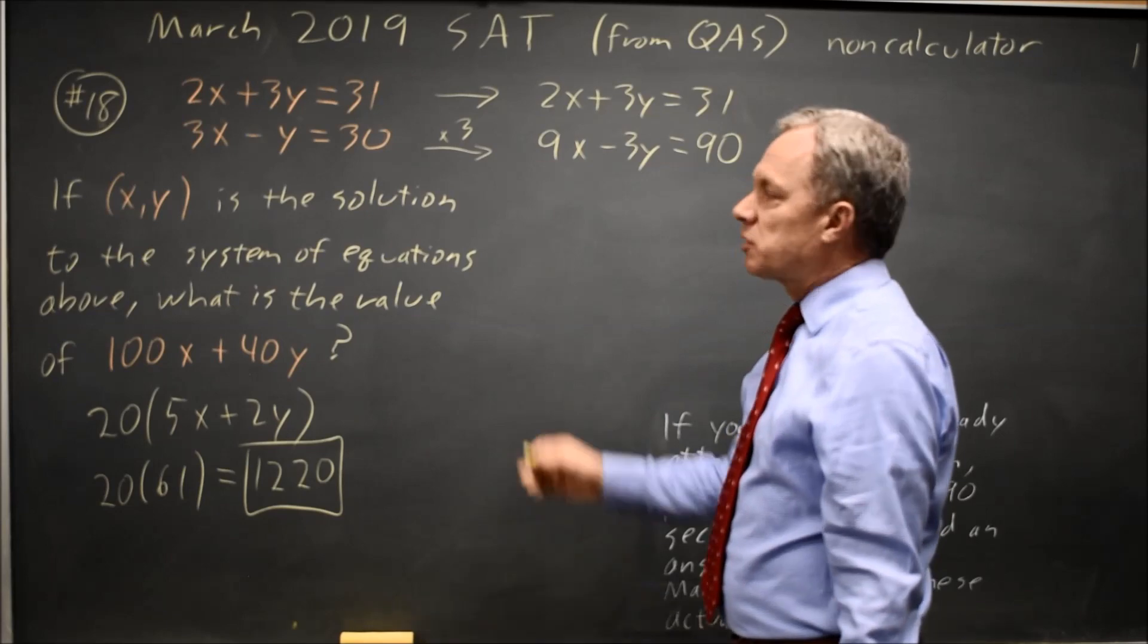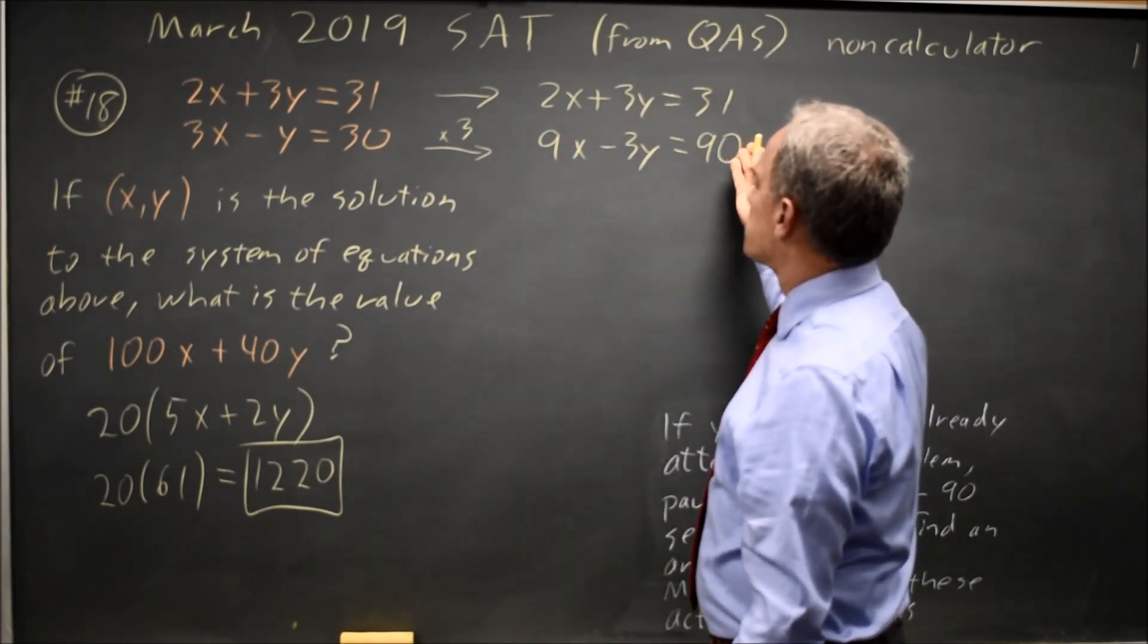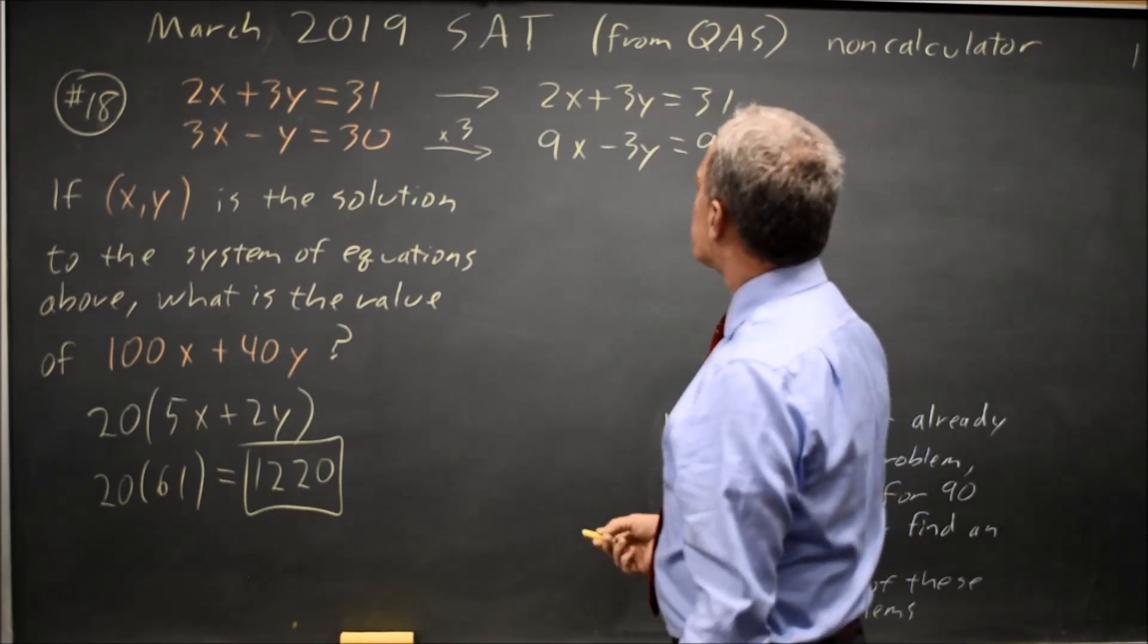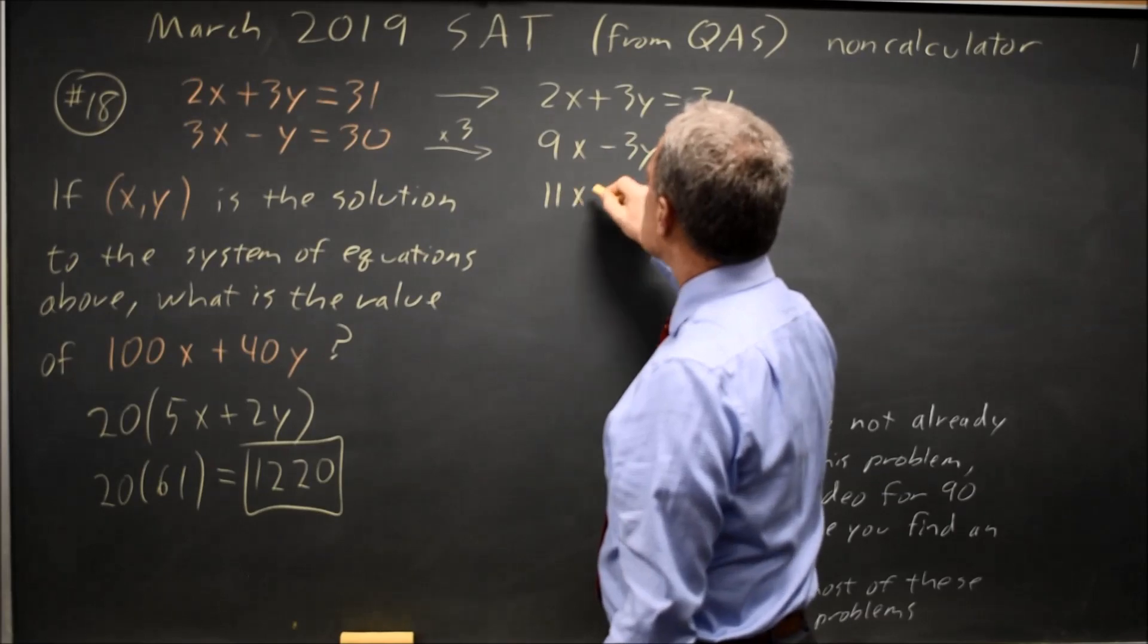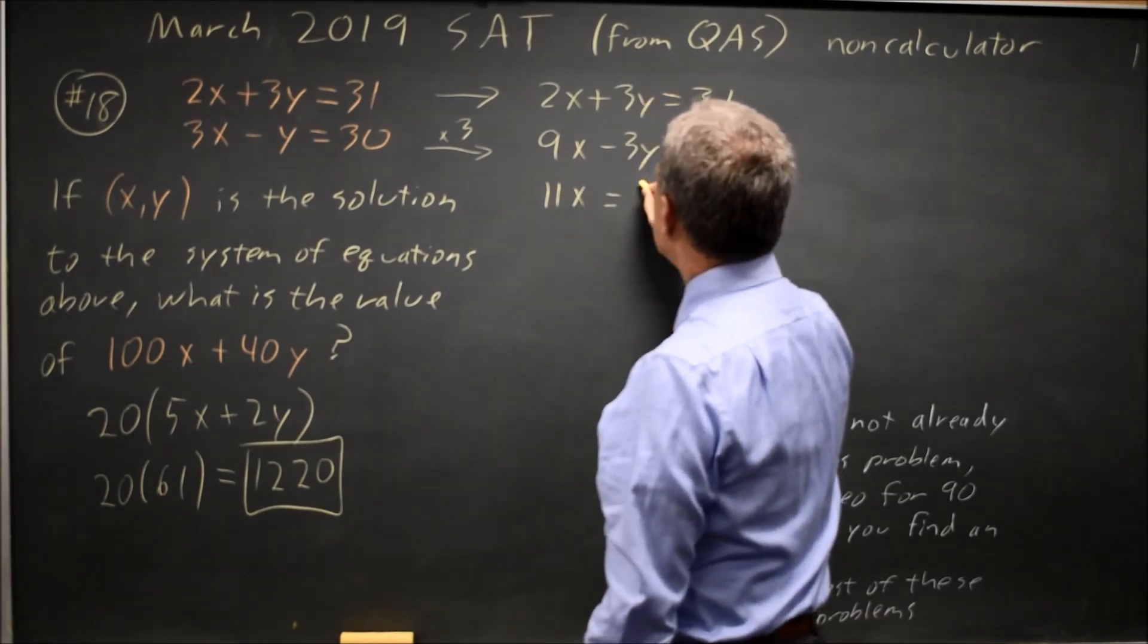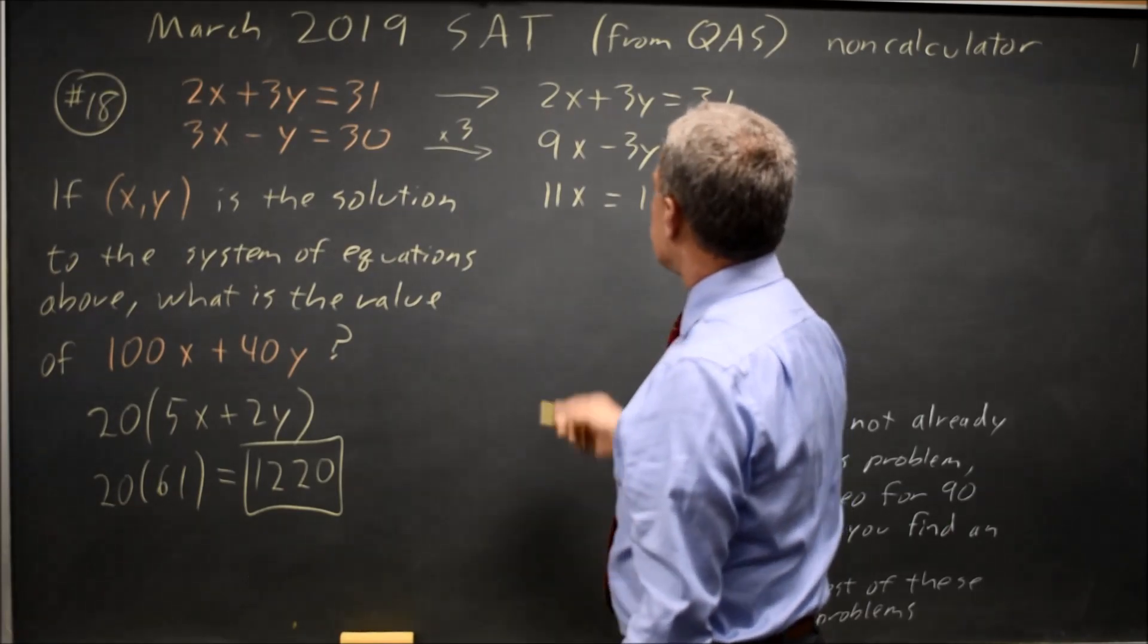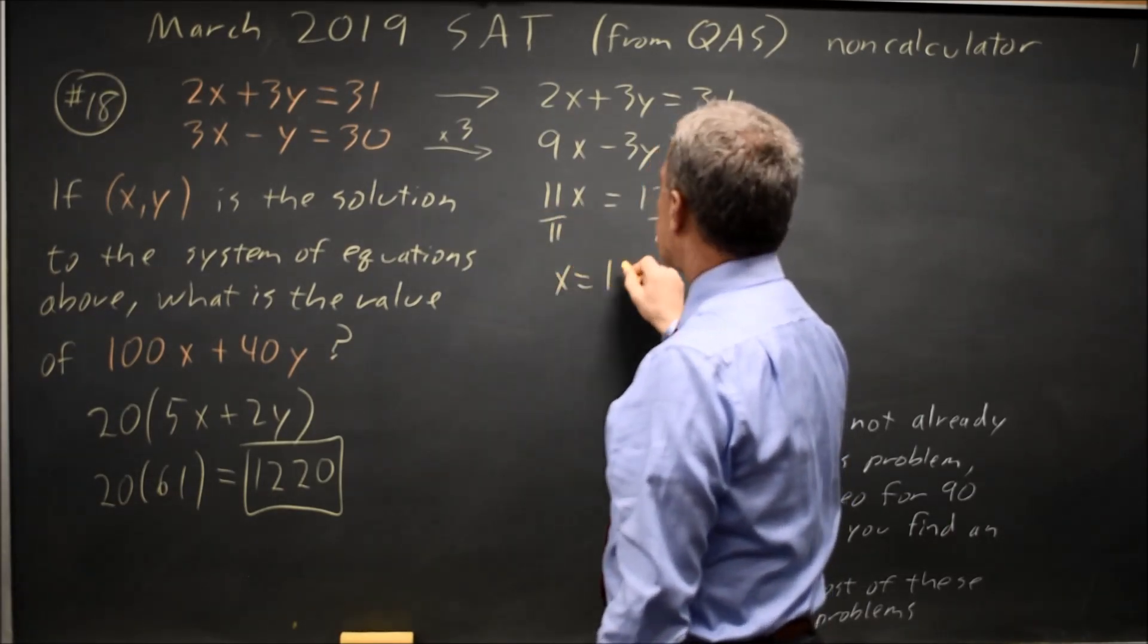Equals 30 times 3 is 90. Be careful that you multiply each term by the constant. We often forget to multiply, for example, the right-hand side by 3. Adding these two equations, 2X plus 9X is 11X. 3Y minus 3Y is 0Y. 90 plus 31 is 121. Divide both sides by 11 to solve for X. X equals 11.